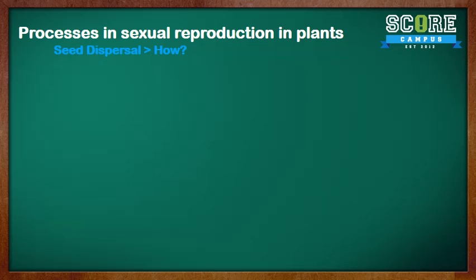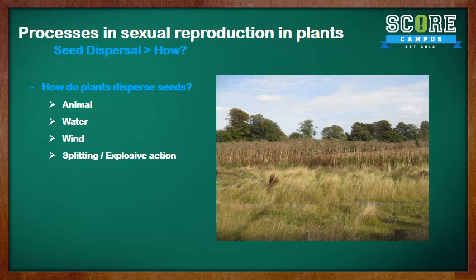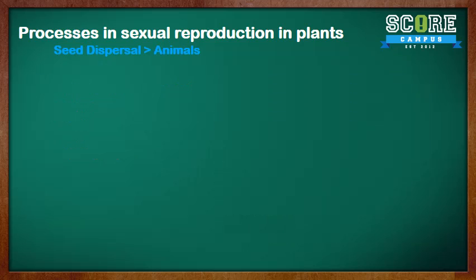So how do plants disperse their seeds? There are four methods: animal dispersal, water dispersal, wind dispersal, and splitting and explosive action. We will be going through them in detail over the next few slides.